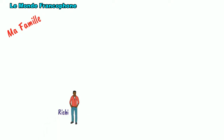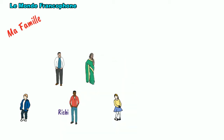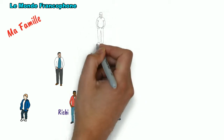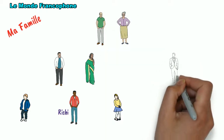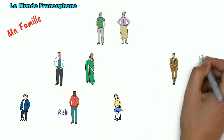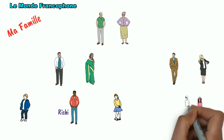Rishi has a brother and a sister. He has parents — mother and father — and he has grandparents, grandfather and grandmother. He lives in a joint family also, and he has an uncle and an aunt, and a cousin brother and a cousin sister. So this is the complete family of Rishi. Now we are going to see how to name these family members in French and then understand how to describe them in French. Let's begin.